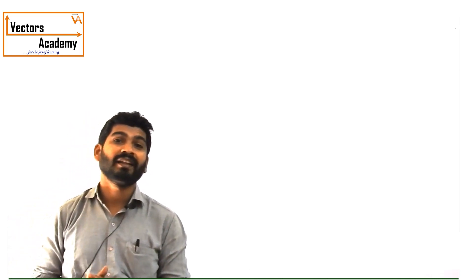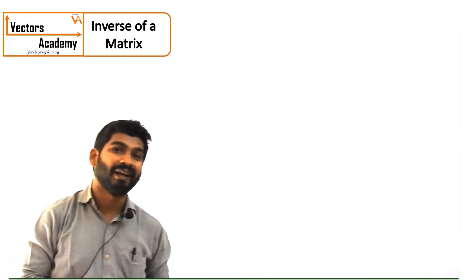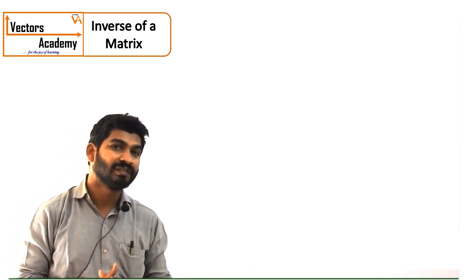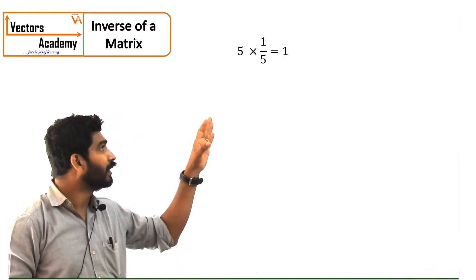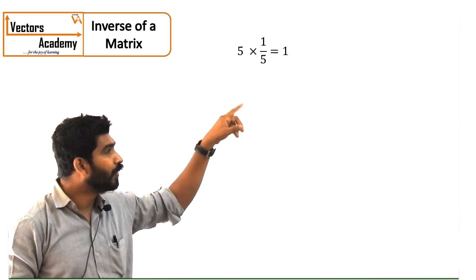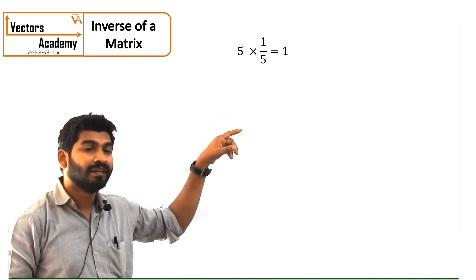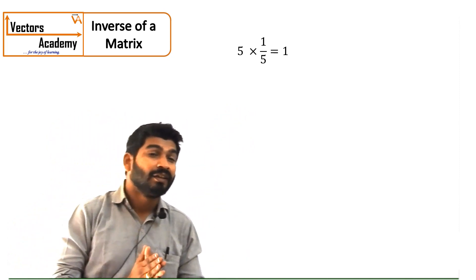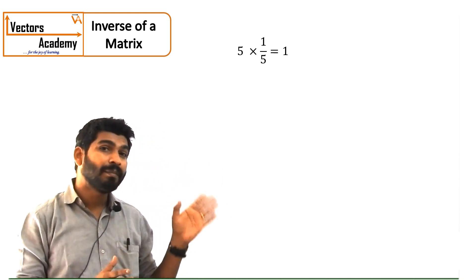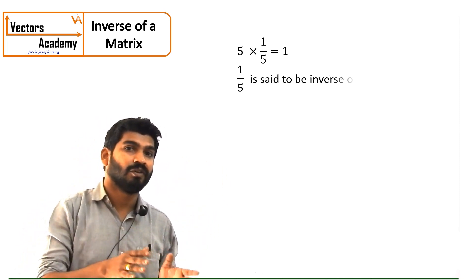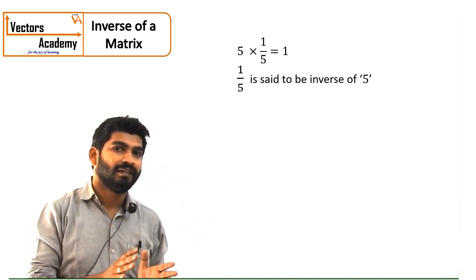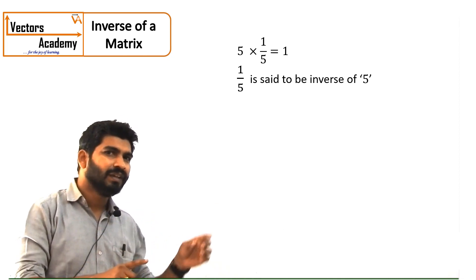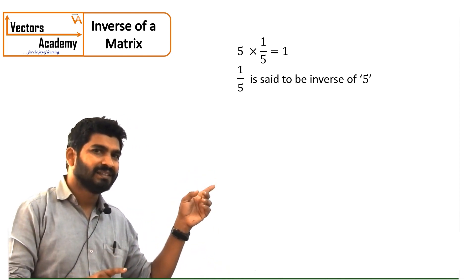Now we will see how to find an inverse of a matrix. First of all let us understand what is inverse. Now if you consider a number 5, if you multiply 5 with 1 by 5, the answer you will get is 1, that is unity. So I can say 1 by 5 is an inverse of 5. In the same way, exactly in the same way, it happens in matrices.